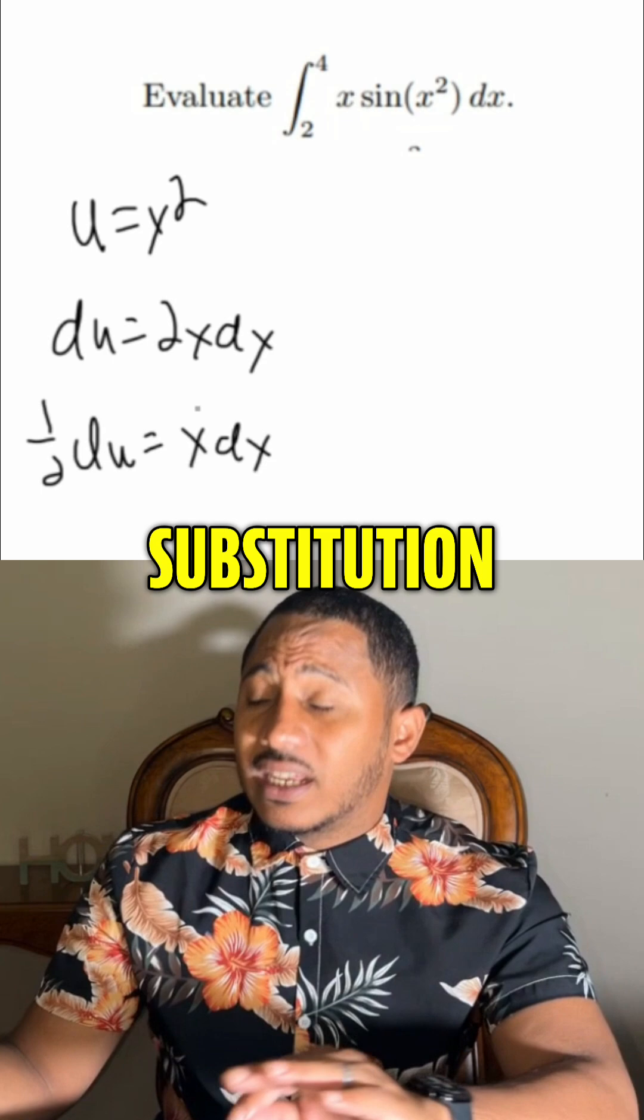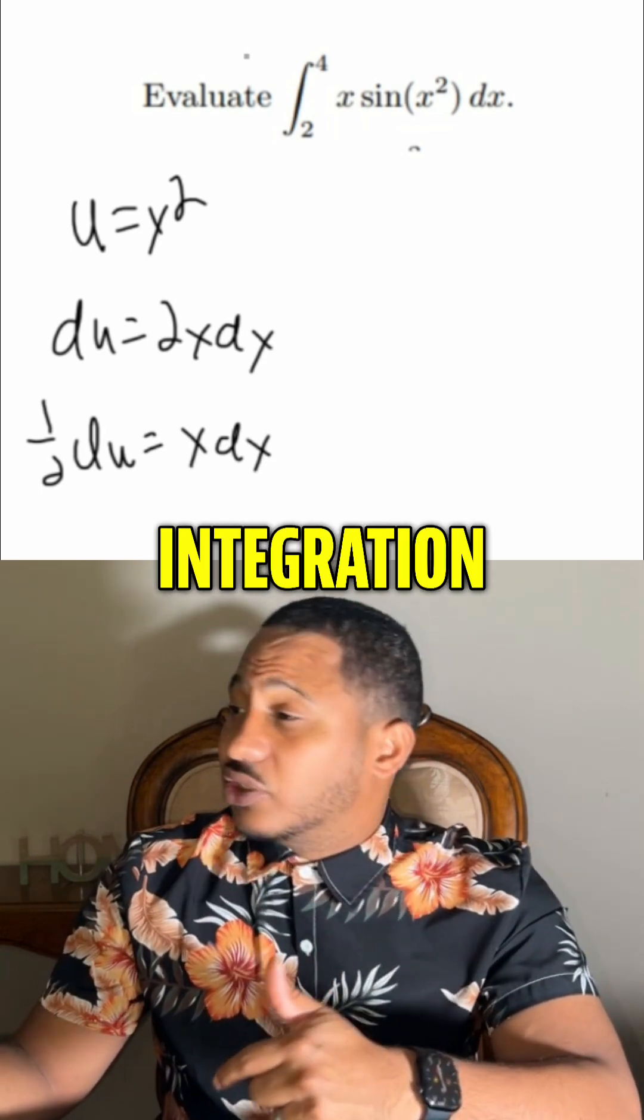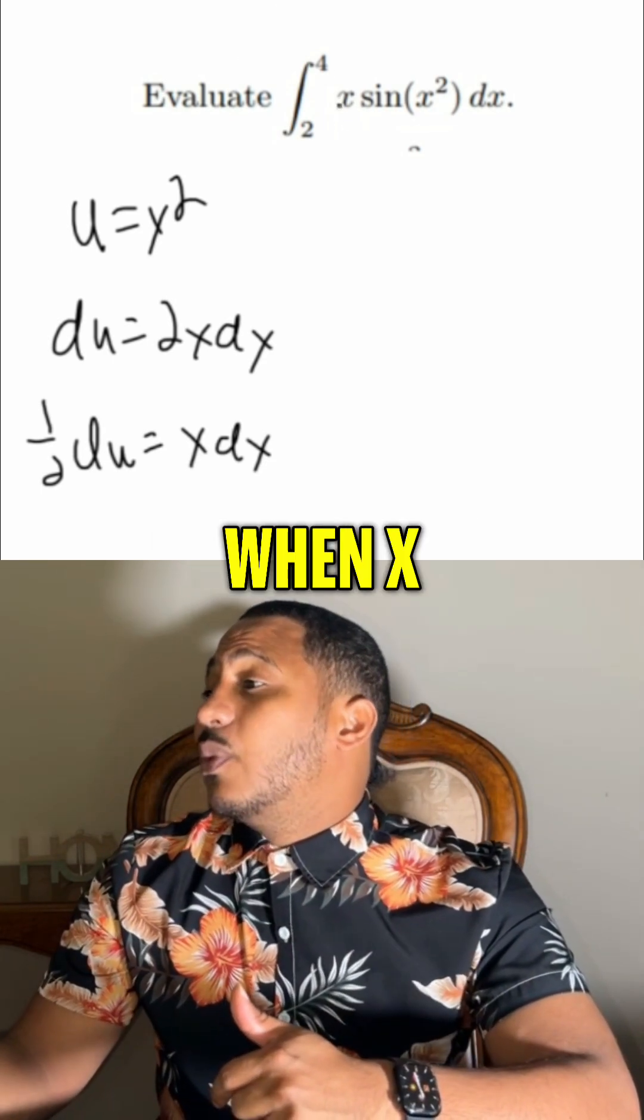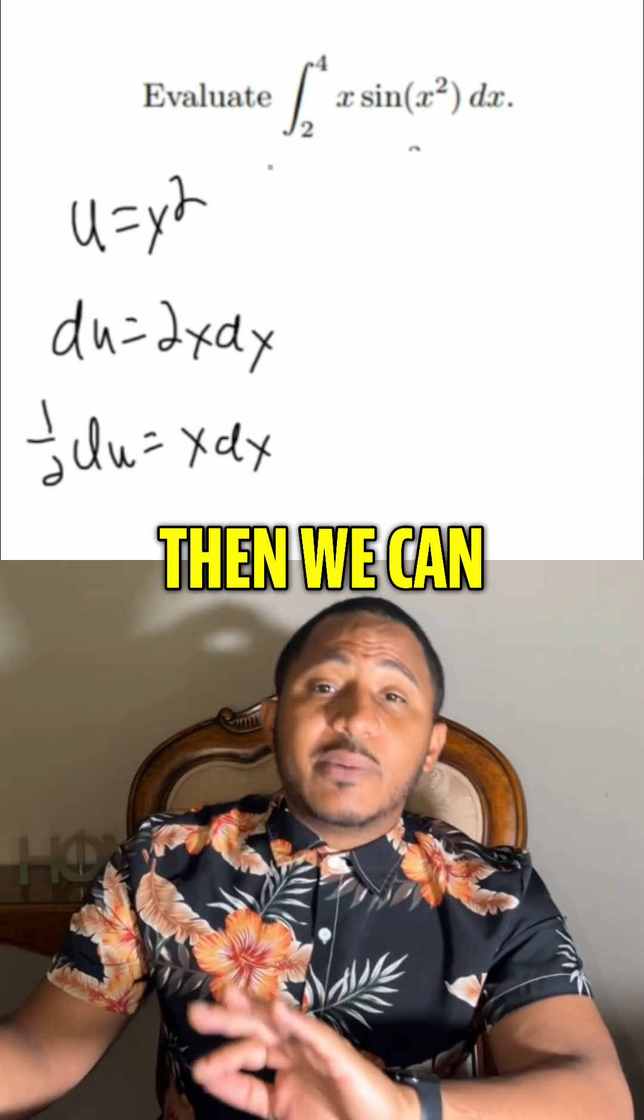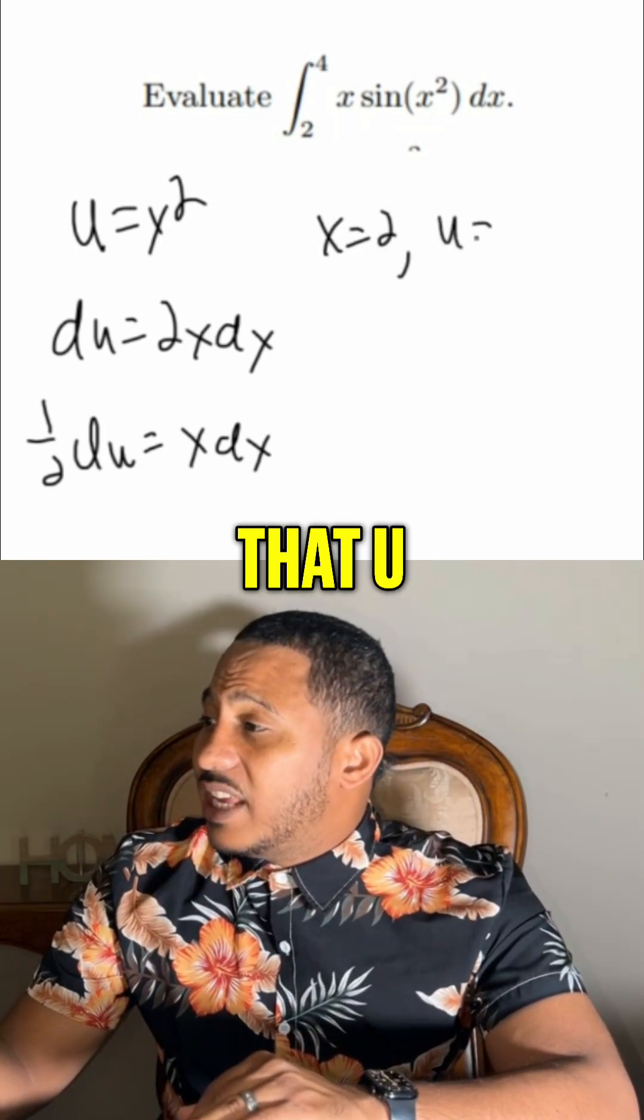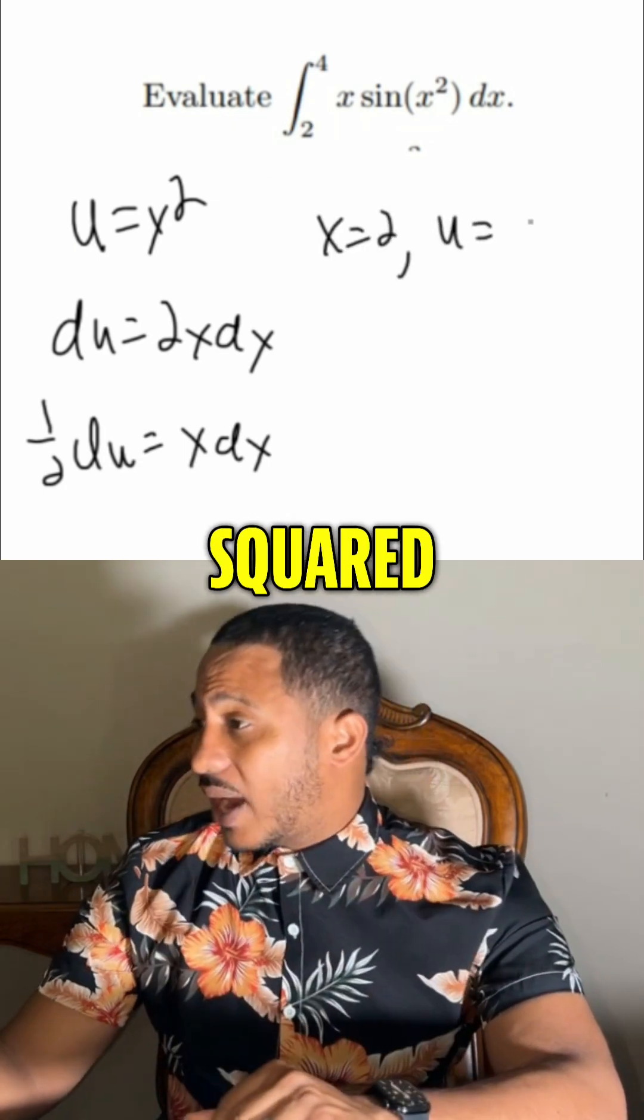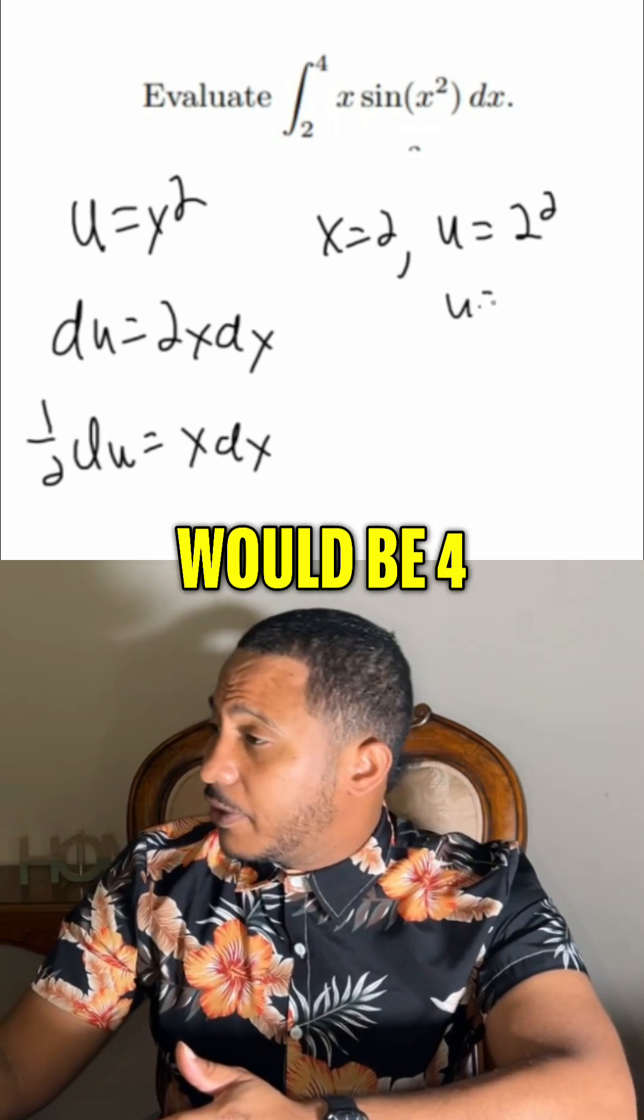Now, we're almost done with our substitution, except we have limits of integration. So if we know that when x equals 2, then we can substitute for that. So that means that u equals that same 2 squared, meaning u would be 4.